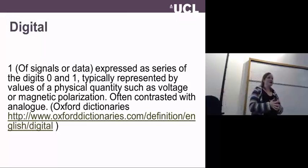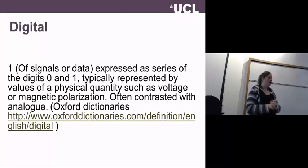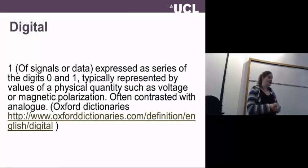Then, digital. Taking a standard definition from the Oxford dictionaries: digital refers to signals or data expressed as a series of digits 0 and 1, typically represented by values of a physical quantity such as voltage or magnetic polarisation, often contrasted with analogue.